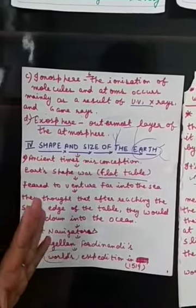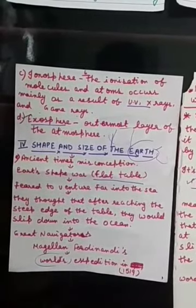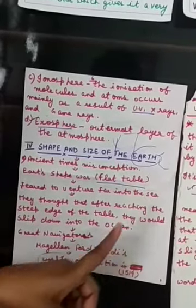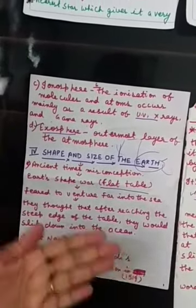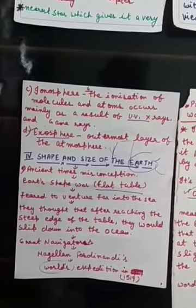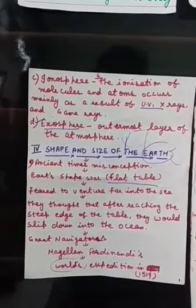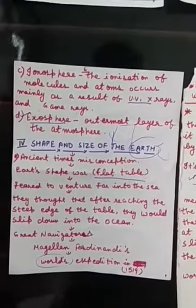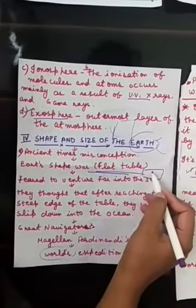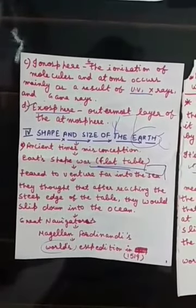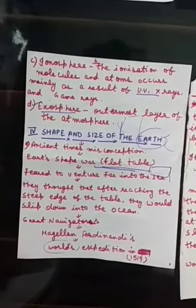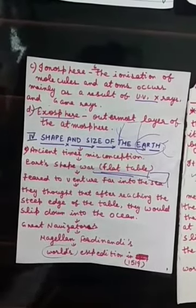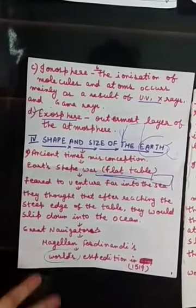Now we are talking about the shape and size of the earth. In ancient times, there was a misconception — people said that the earth was a flat table. They thought that after reaching the steep edge of the table, they would slip down into the ocean. Even great navigators like Christopher Columbus had difficulty collecting his views during his expedition, believing it was a flat table.